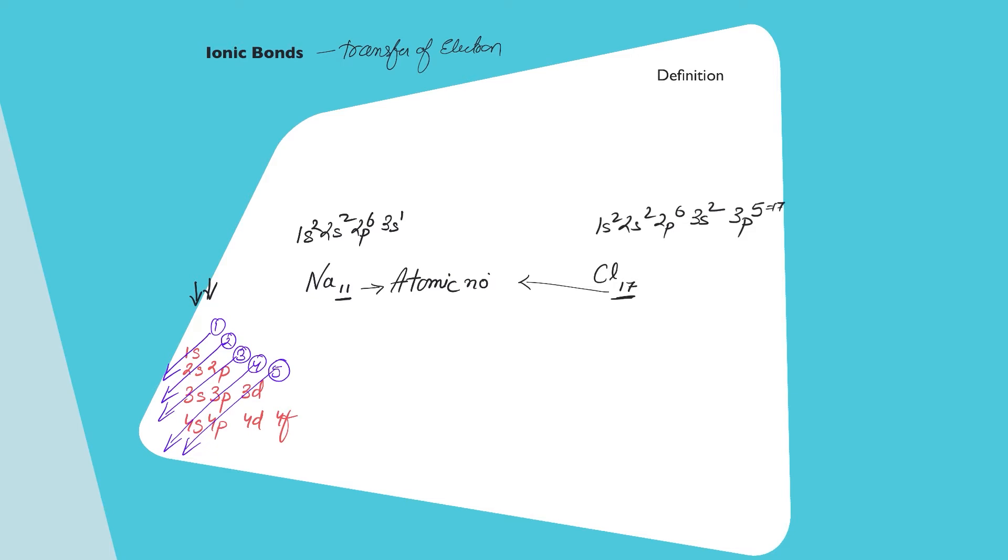Now you can clearly see that sodium here has one extra. So if somehow sodium could lose this one and chlorine could get an extra one, both would be stable. Now what do we mean by stable?